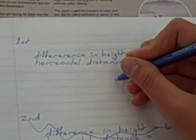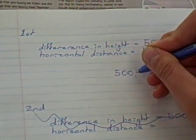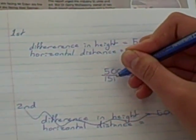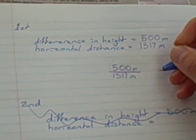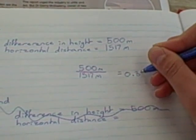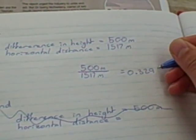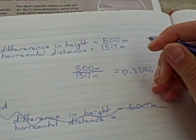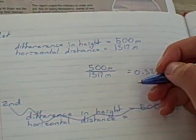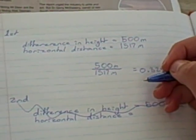So it's 500 metres divided by 1517 metres, which comes out to 0.3296. This is expressed in a decimal form, but we need to change this to a degree.